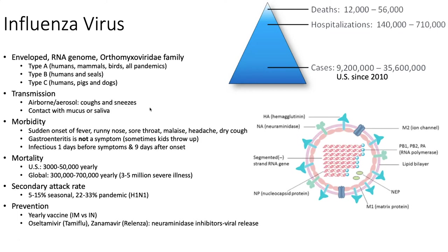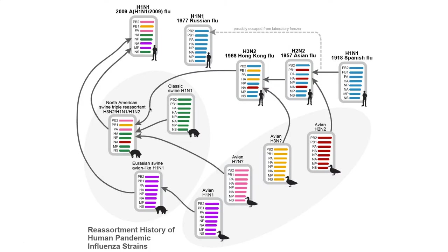People will claim that getting the flu vaccine gave them the stomach flu — there's a lot of misinformation about that. Little kids will sometimes get sick and throw up, but that doesn't mean they have influenza. It's also consistent that influenza is infectious one day before any symptoms and nine days after. Mortality rates in the United States are in the tens of thousands typically — on a good year a couple thousand, usually the elderly, but on a rough year tens of thousands. Globally, three to five million people get really sick and hundreds of thousands die. It's a huge problem, with a really high secondary attack rate. This is explaining the difference between just the seasonal flu versus pandemic strains.